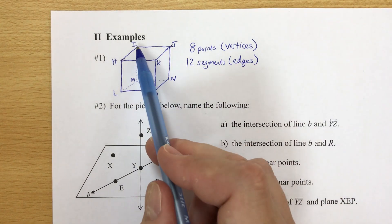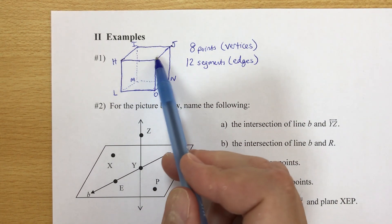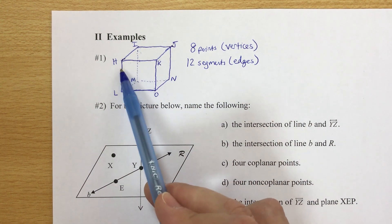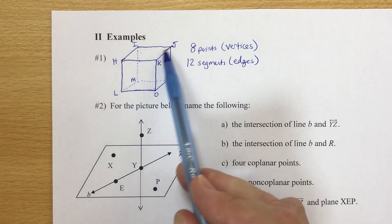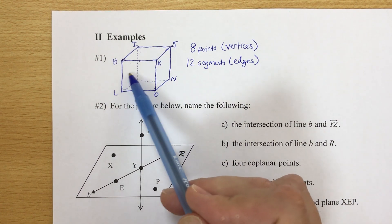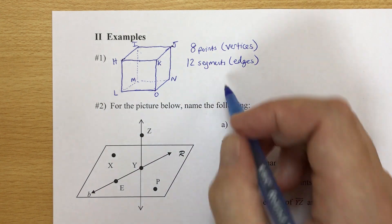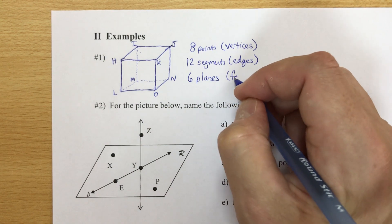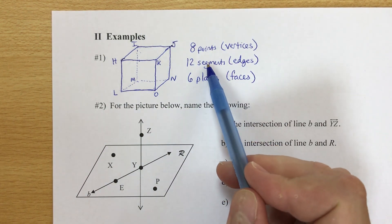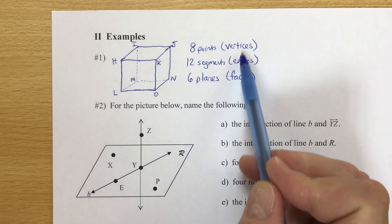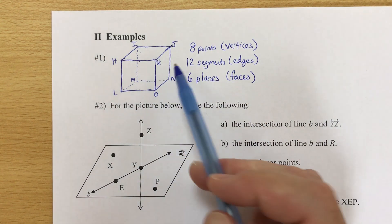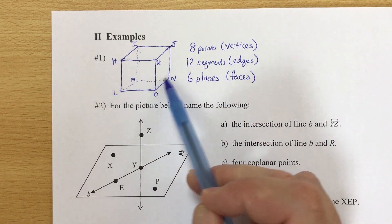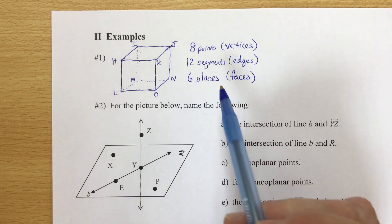Looking at the flat surfaces — the planes — we have the top and bottom, that's two; the front and back, that's two more; and the left side and right side. So we have six planes, or what we call faces. So: points, line segments, and planes become vertices, edges, and faces when talking about three-dimensional figures.